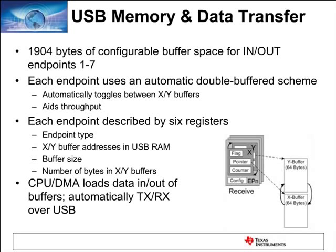This slide describes how the USB controller transfers data packets from the USB host to USB buffers. There is a dedicated 2-kilobyte RAM space for USB; when USB is disabled, this RAM can be used by the application. When USB is enabled, endpoint 0 is always the default endpoint with a dedicated buffer space. The remaining endpoints 1 through 7 have configurable buffer spaces that act as communication channels, each with an associated buffer.